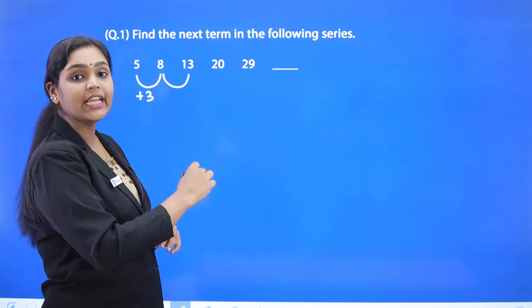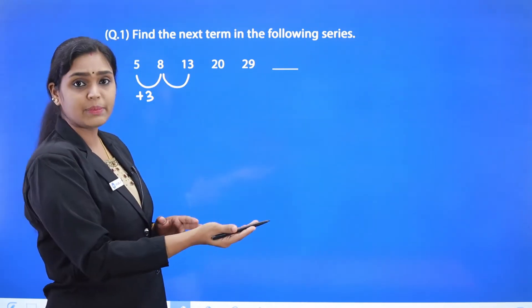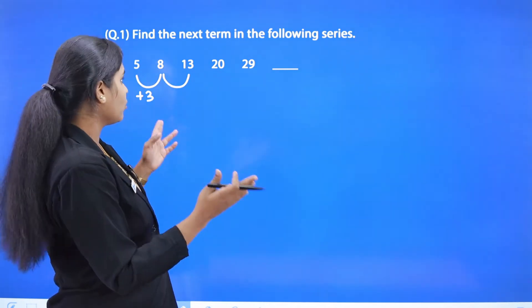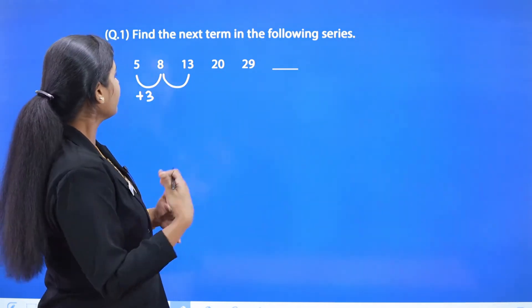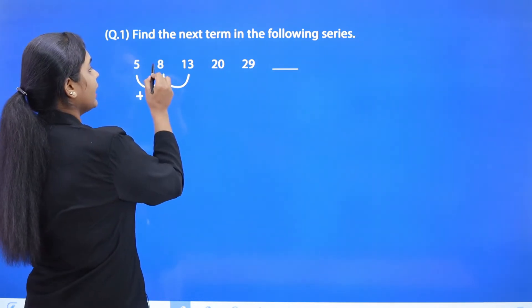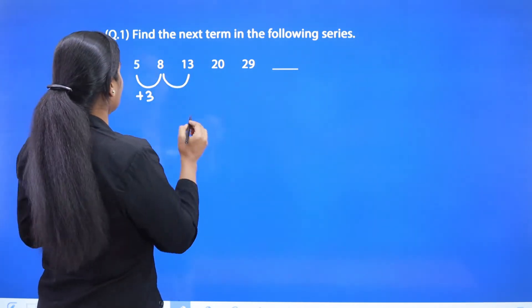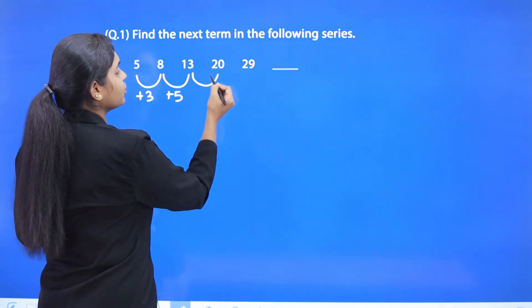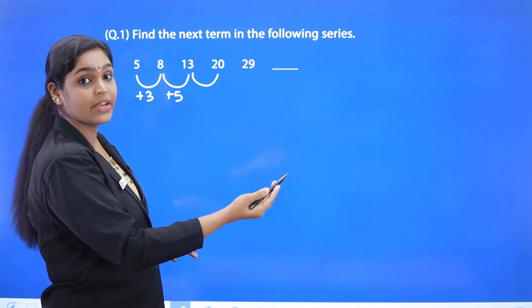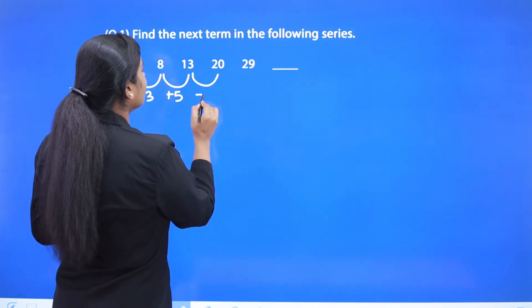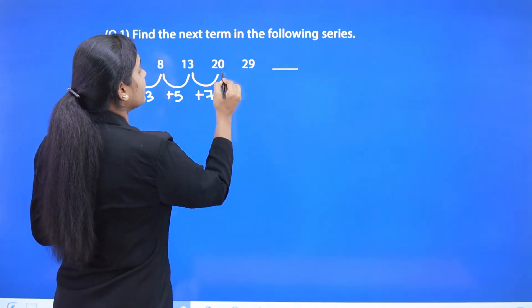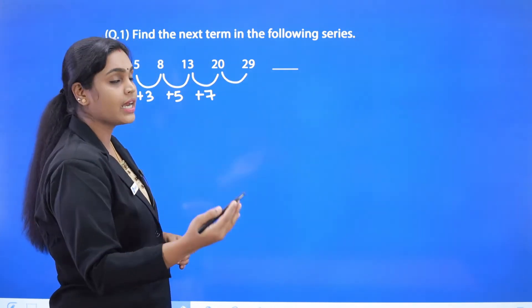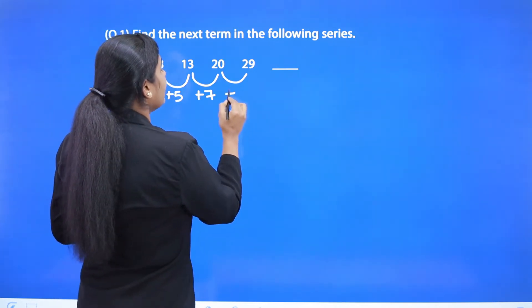Now consider the next two terms, 8 and 13. There is no multiplicative relation, so we take the difference: 13 minus 8 is 5, so 8 plus 5 is 13. Then 13 plus 7 is 20, so we write plus 7. Next, 20 and 29: 20 plus 9 is 29, so we write plus 9.